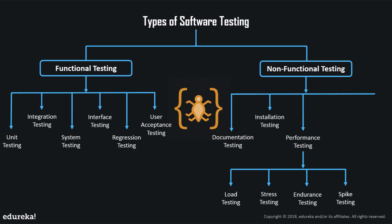Reliability testing checks whether the software can perform a failure-free operation for a specific period of time. It assures that the product is fault-free and reliable for its intended purpose. Security testing helps in determining that data and resources are protected from possible intruders — security being a key element of software testing. These are the different types of non-functional testing.